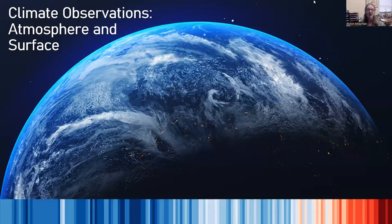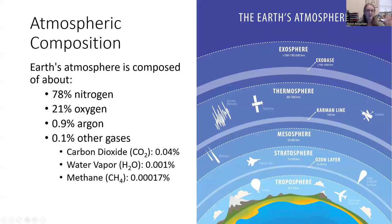The first thing we're going to talk about is how our atmosphere and the surface of the Earth has changed over time. We know that our atmosphere is composed of lots of different gases, mainly nitrogen and oxygen, but a little bit of argon and other gases, including carbon dioxide, water vapor, methane, and all that good stuff.